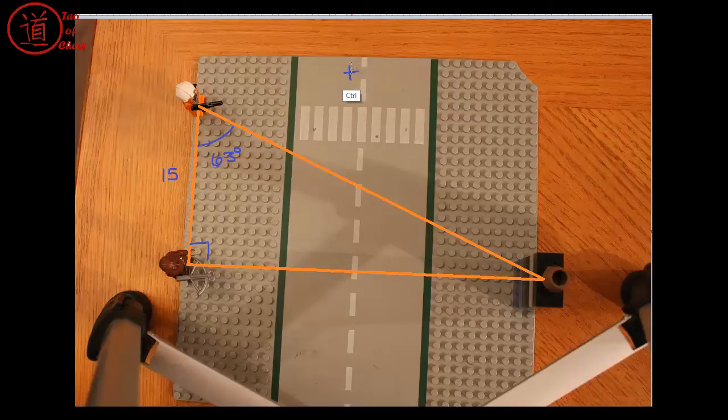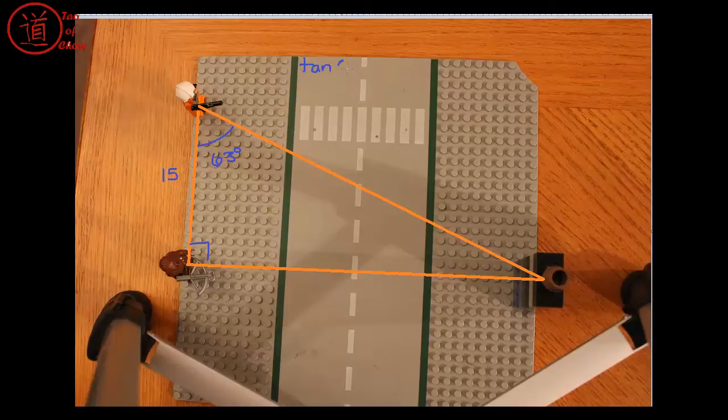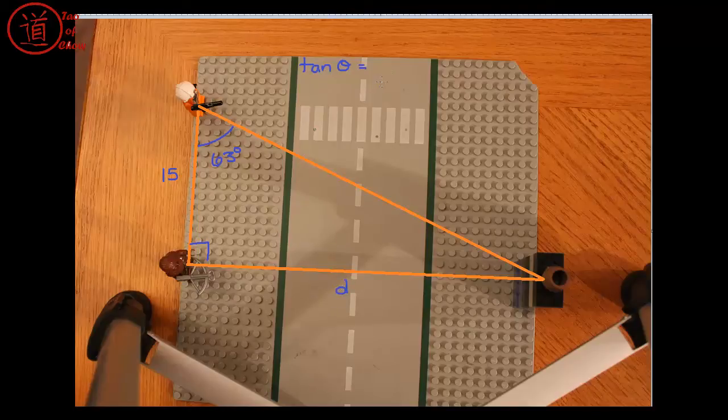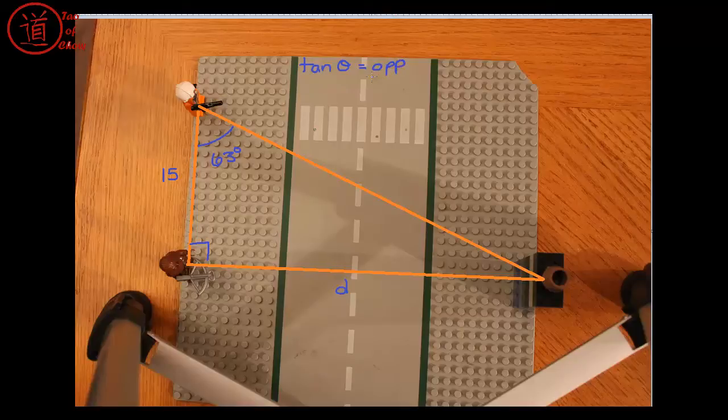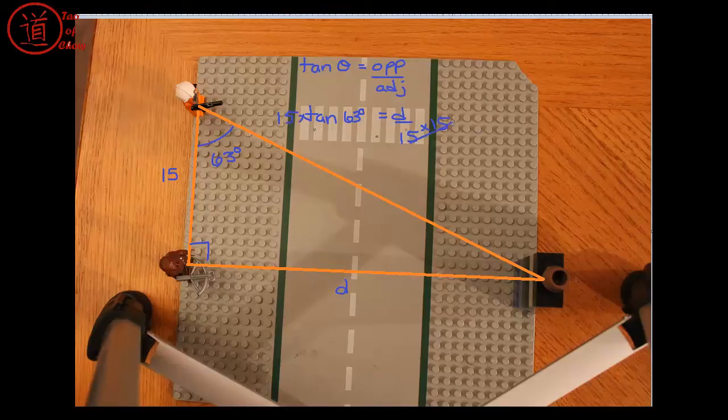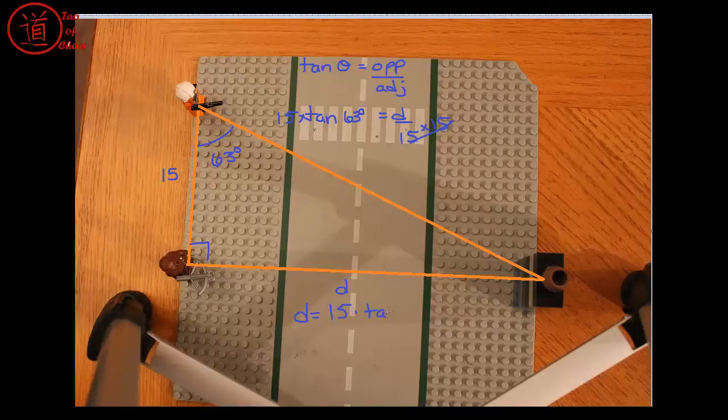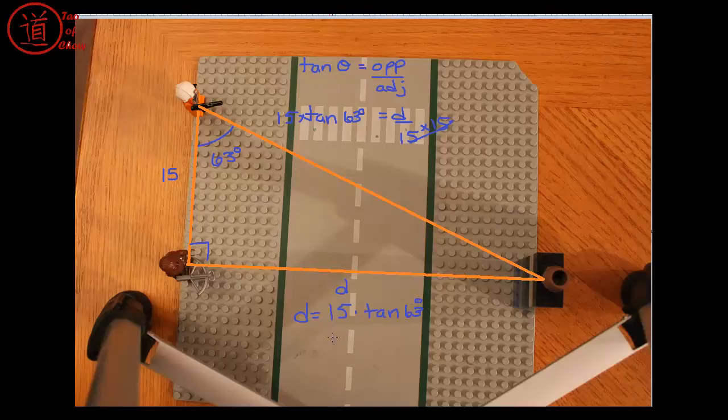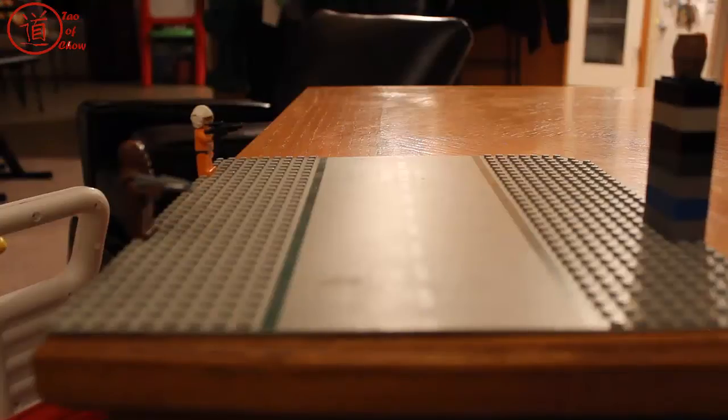So tan of 63 degrees is equal to D over 15. I can multiply both sides by 15. And what I'll get is that D is equal to 15 times tan 63. And what that is, is 29.4. So D is equal to 29.4. And so by using some, just a quick trig ratios, we can find the distance between Chewbacca and the barrel.